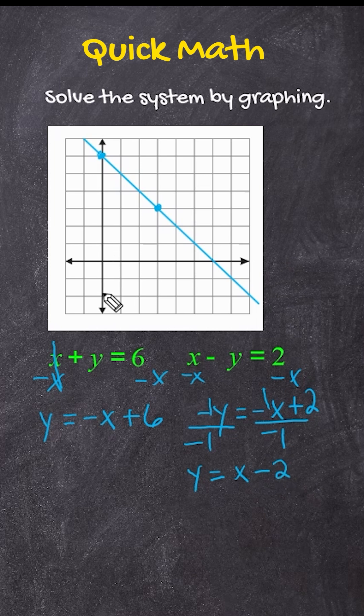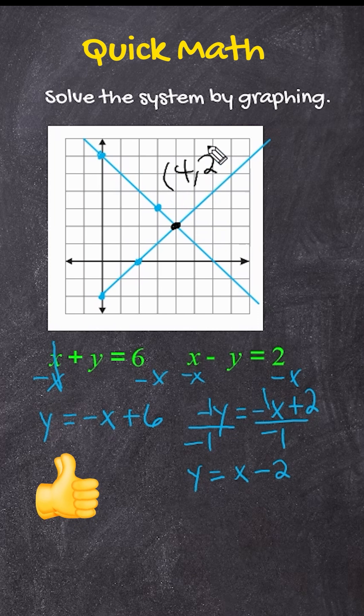And for this equation, we're going to make a point at negative 2 on the y-axis. And we're going to go up 1 over 1, up 1 over 1, make our line. And we can see that our lines cross at positive 4, positive 2.